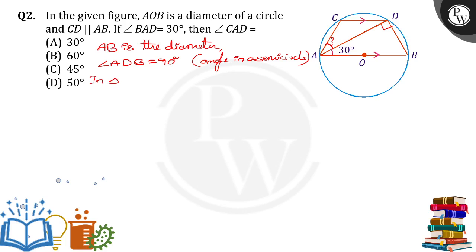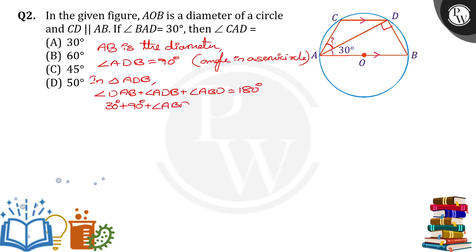Now in triangle ADB, angle DAB plus angle ADB plus angle ABD is equal to 180 degrees. DAB is given as 30 degrees, plus ADB is equal to 90, plus angle ABD equals 180 degrees. So 30 plus 90 is 120, and angle ABD is equal to 180 minus 120, which gives angle ABD equal to 60 degrees.